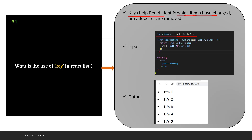You can always apply the key on the index. This is how you apply the key — we are printing the number here and returning the updated numbers. This is how your output will look like.